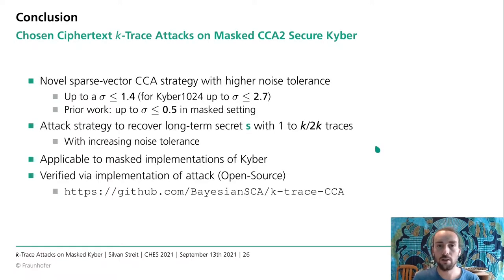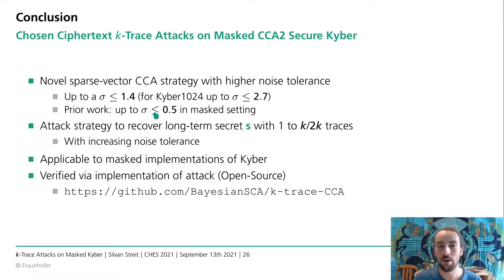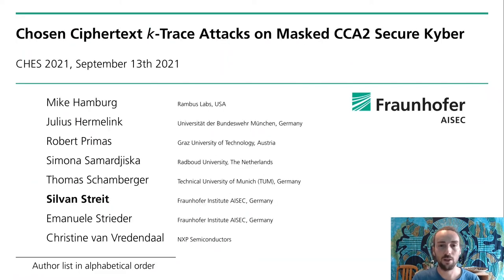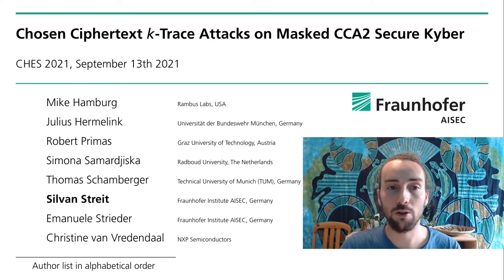To conclude: I presented a novel sparse CCA strategy with higher noise tolerance than before, working with a sigma of up to 1.4 or for Kyber-1024 up to sigma 2.7, compared to prior work in a similar setting which only succeeded up to sigma 0.5. Our attack strategy is applicable to recover the secret S from 1 to K traces with increasing noise tolerance as the number of traces increases. Our attack is also applicable to masked implementations of Kyber. You can check out our open-source implementation on GitHub to verify it for yourself. Thank you so much for watching and I hope you have a great day.